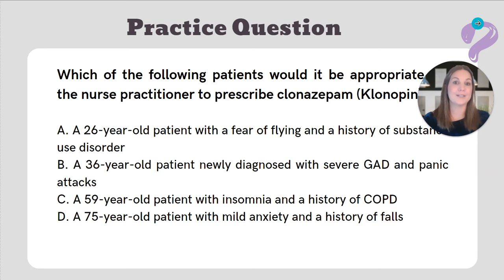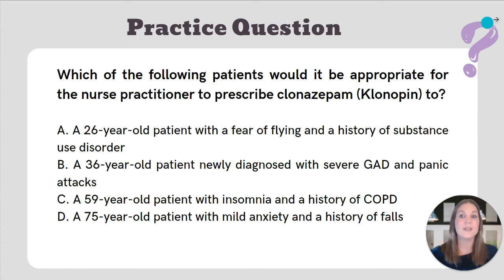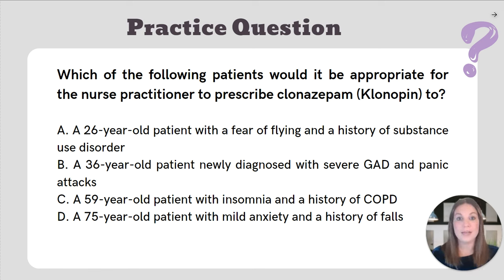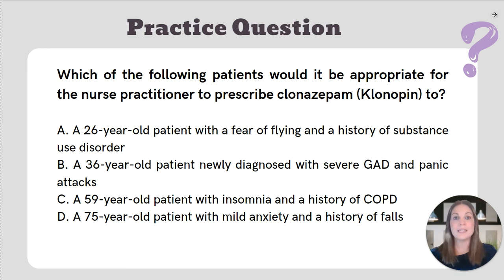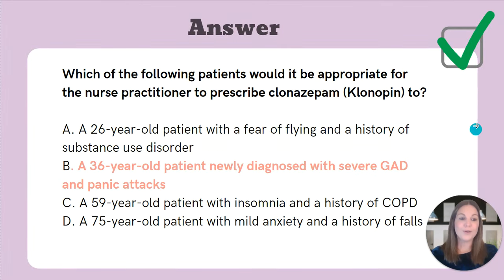Let's try out a practice question. Which of the following patients would it be appropriate for the nurse practitioner to prescribe clonazepam to? A: a 26-year-old patient with a fear of flying and a history of substance abuse disorder; B: a 36-year-old patient newly diagnosed with severe GAD and panic attacks; C: a 59-year-old patient with insomnia and a history of COPD; or D: a 75-year-old patient with mild anxiety and a history of falls. The correct answer is B, the 36-year-old patient with newly diagnosed generalized anxiety disorder.